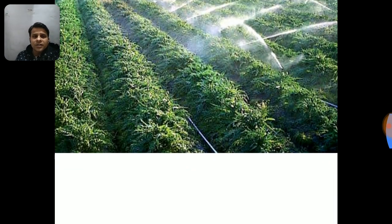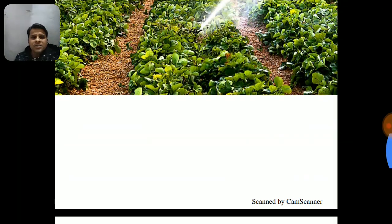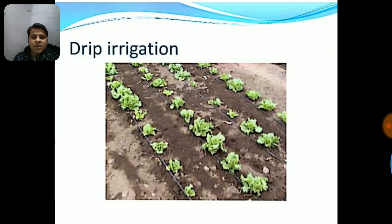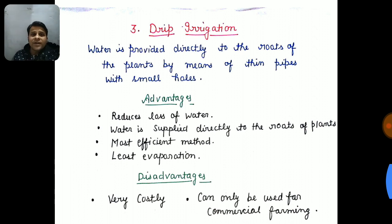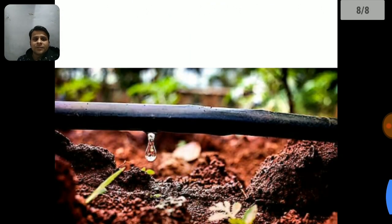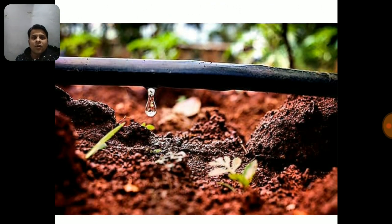Now let's talk about the last third method: drip irrigation, which is a very scientific and important method, especially in the present time. In drip irrigation, water is provided directly to the roots of the plants by means of thin pipes with small holes. Drop by drop, water is delivered to the cultivated land where the trees are placed, which is called drip irrigation.